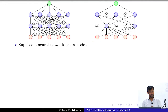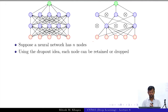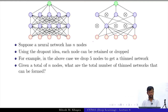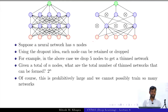Suppose a neural network has n nodes. Using the dropout idea, each node can be retained or dropped, giving a total of 2 raised to n different thin networks that can be obtained from it.